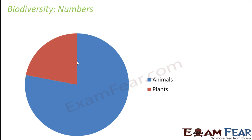Before we talk about ways to conserve biodiversity, let us look at some numbers that will tell us what is the need of the hour — how many species were there, how many currently exist, and whether the number of species has decreased or increased.